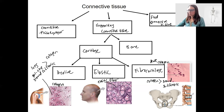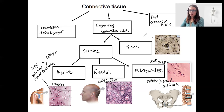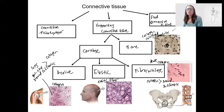Lastly, we've got bone. Bone has a very small amount of ground substance and a lot more collagen, as well as a calcified matrix. I'm going to have another video on the histology of bone, but this calcified matrix makes it strong — more shatter resistant, but still flexible because there's still a collagen fiber matrix.